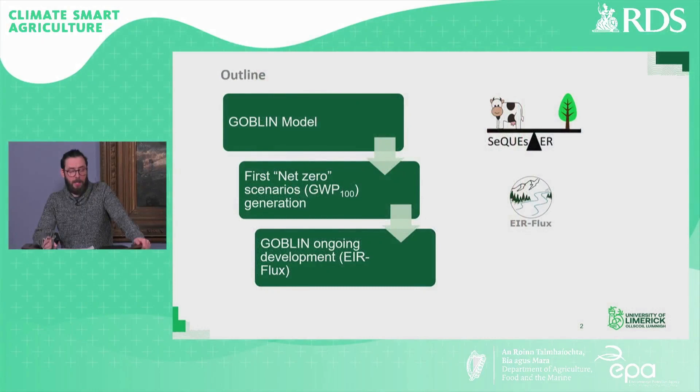My name is Cullum Duffy and I'm an EPA fellow at the University of Limerick and formerly the postdoctoral researcher on the Sequester project. This is my presentation on randomized land management scenario modeling with GOBLIN. We'll start off by looking at the GOBLIN modeling framework, then examine the net zero scenarios we produced with it, before going on to look at some current developments with the model.